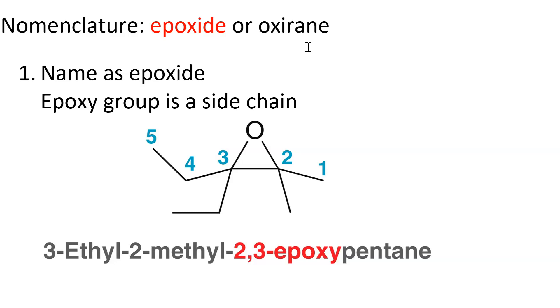So if you're naming it as an epoxide, you're treating the epoxy group as a side chain on the parent, which has five carbons for the longest carbon-carbon chain.